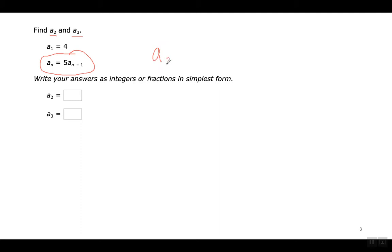To find the second term, I've got to substitute a 2 where the N is — a 2 there and a 2 here. When I put the 2 here, 2 minus 1 is 1. So the formula will be simplified and it will say: the second term equals 5 times the first term.